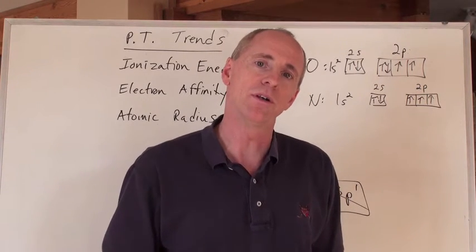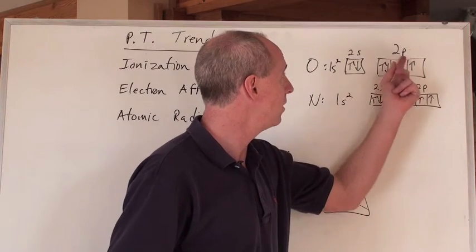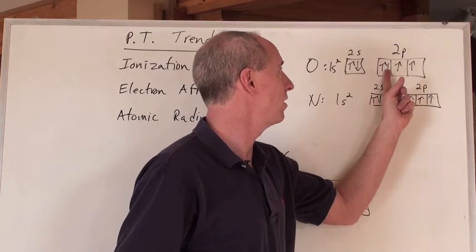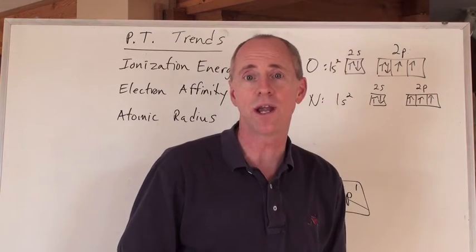And so actually, the first double occupancy orbital that you have in the 2p's is always an electron that says, I don't even want to be there, and so it's an exception to the trend.